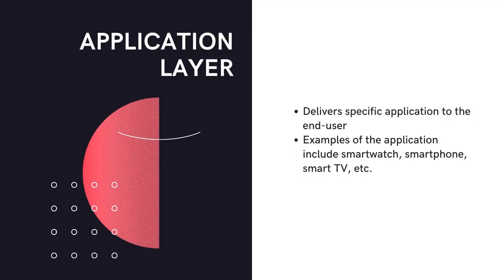The next layer is the application layer. This layer defines all applications in which IoT has been deployed. It is the interface between the end IoT devices and the network, and is responsible for data formatting and presentation. It is also responsible for delivering specific applications to end users — for example, smart homes, smart cities, smart TVs, and more.